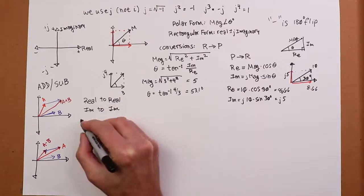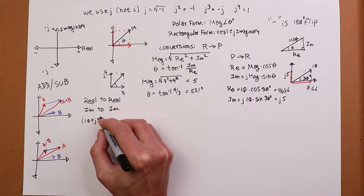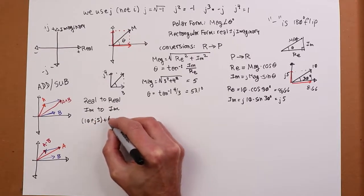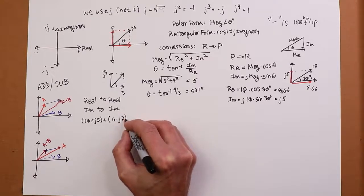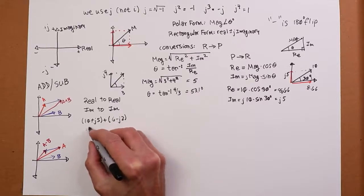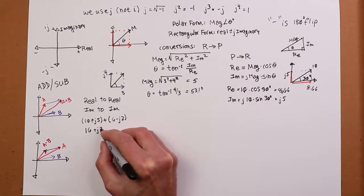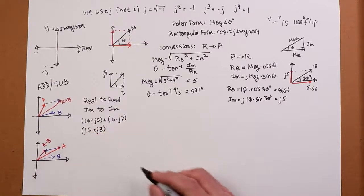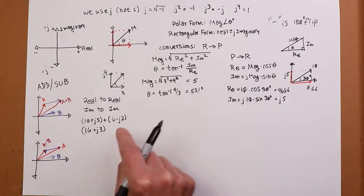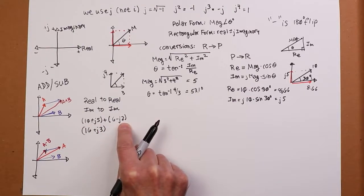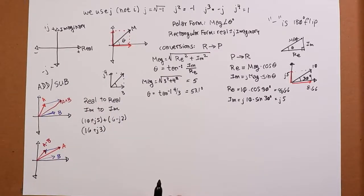So as an example, let's say we have one vector that's 10 plus J5 and I want to add another vector that's 6 minus J2. Add the reals together, that's 16. Add the imaginaries together, that's plus J3. There's your answer. And if you're going to subtract, then you subtract the real. So I would subtract 6 from 10, I would subtract the negative 2 from 5. And that's how I would do my subtraction.